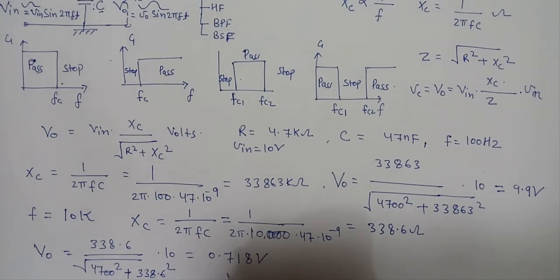We can see from the result that as the frequency applied to the RC network increases from 100 hertz to 10 kilohertz, the voltage dropped across the capacitor and therefore the output voltage Vout from the circuit decreases from 9.9 volt to 0.718 volt.